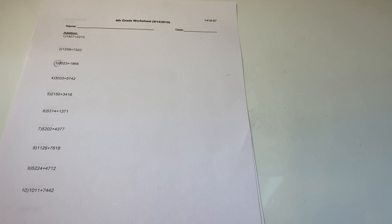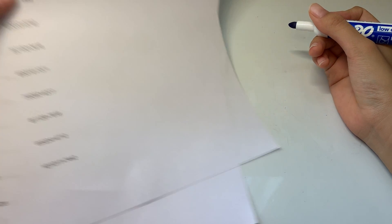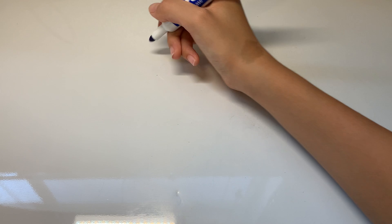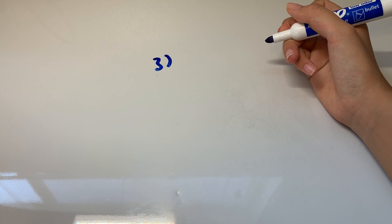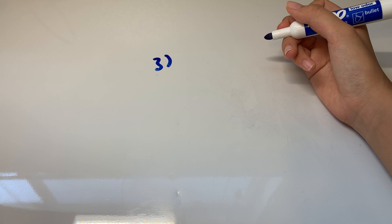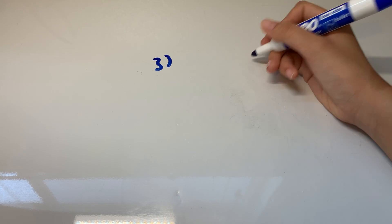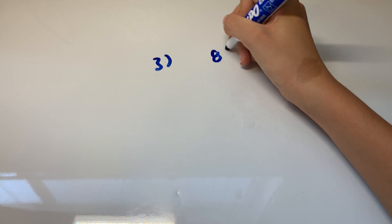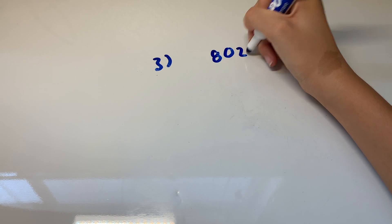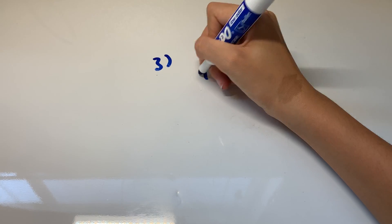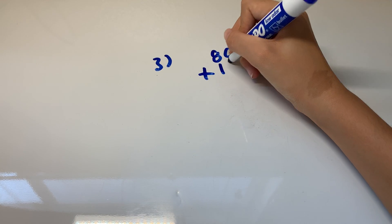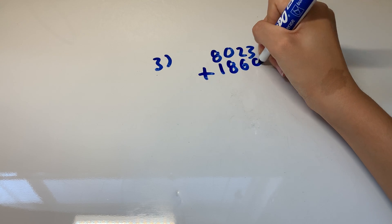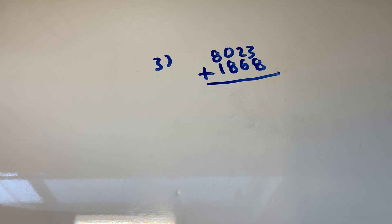We're going to start with number three. This one's easier than the decimal problems we did previously just because there's no decimals in it and all the numbers have the same amount of digits. So we have 8023 added to 1868. What you want to do is line them up by the place value.